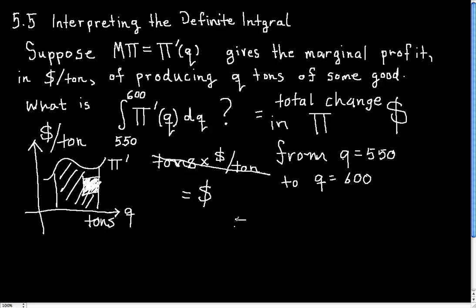So another way of simply rephrasing this is profit from the 550th through the 600th ton. And it's in dollars. As we discovered earlier, the units of this definite integral are in dollars.